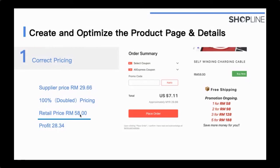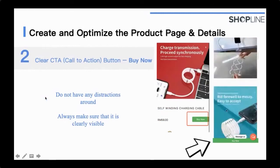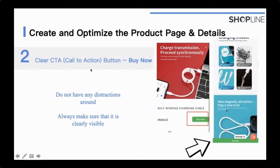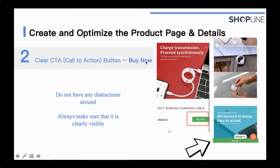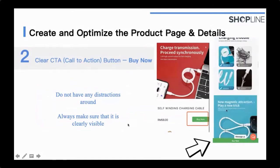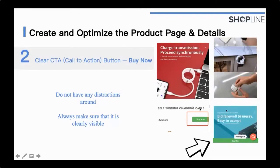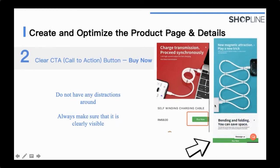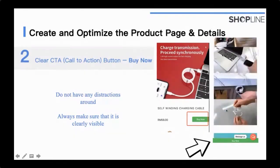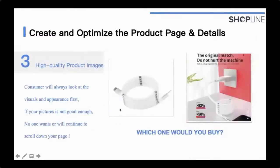The second consideration is having a clear call-to-action button — a 'Buy Now' button that is always visible on your page. This prompts customers to make a purchase while browsing. Avoid too many distractions or unnecessary information — keep it clear and to the point. The third consideration is having high-quality product pictures. Looking at two product images, the one with a title, subtitle, key information, and a nice background is much more compelling than a plain vague one.